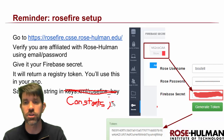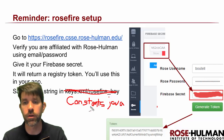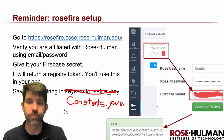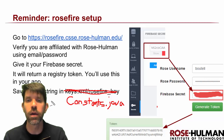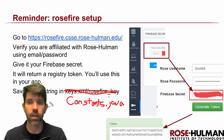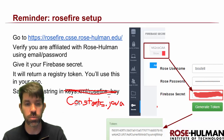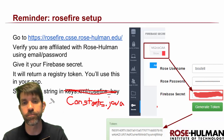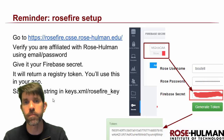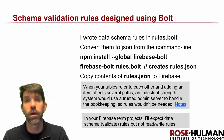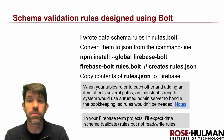Storing the token in constants.java is fine — it doesn't really matter too much since someone decompiling your program could find it either way. And since it doesn't depend on device or locale like a resource would, it makes sense to keep it with the other constants.